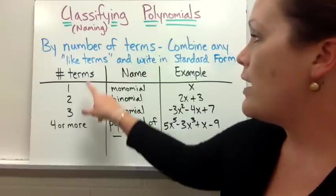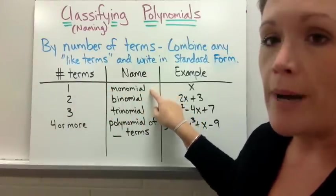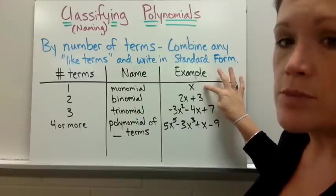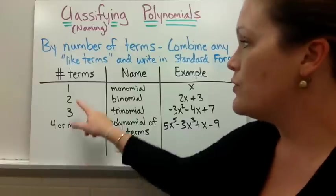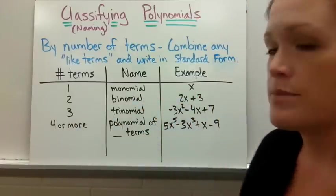So if you have one term in your polynomial that is just called a monomial. For example we could just put x. If you have two terms it's called a binomial and for example we could put 2x plus 3.